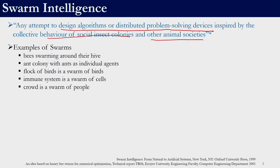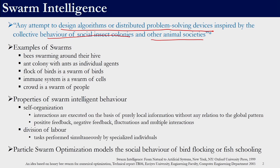Examples of swarms are: bees swarming around their hive, ant colony with ants as individual agents, flock of birds as a swarm of birds, immune system as a swarm of cells, and crowd as a swarm of people. Any algorithm designed with this as its inspiration is a swarm intelligence algorithm. The two properties of swarm intelligence behavior are self-organization and division of labor. By self-organization we mean that the interactions are executed on the basis of purely local information without any relation to the global pattern.